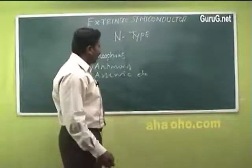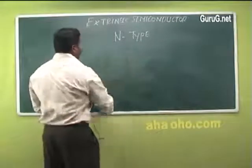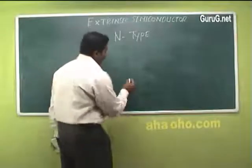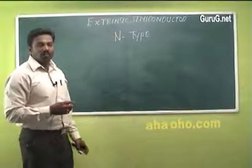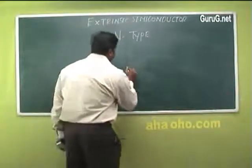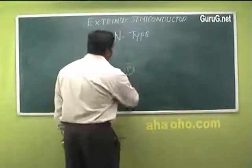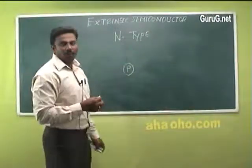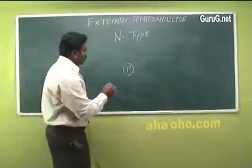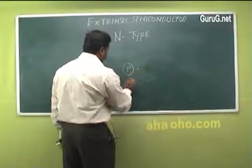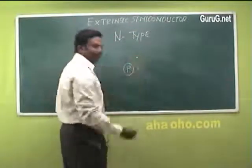In case of n-type semiconductor, the valency electron of germanium is 4. If a phosphorus impurity is added — it is a pentavalent element — it consists of 5 valency electrons. So 4 electrons form covalent bonds and there is 1 excess electron.